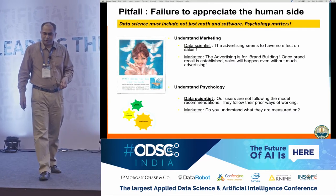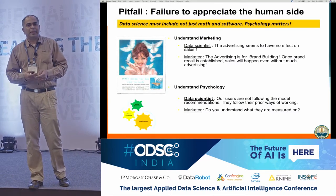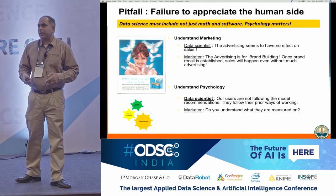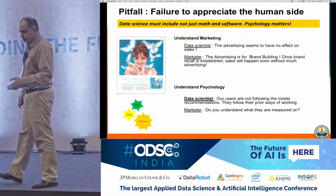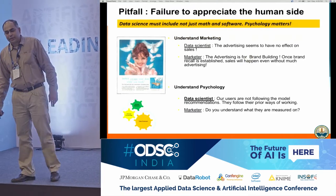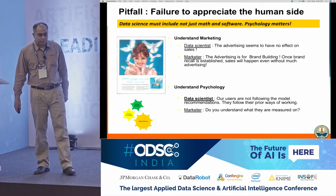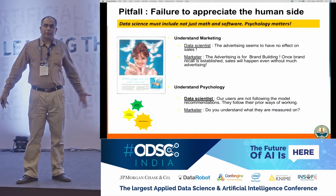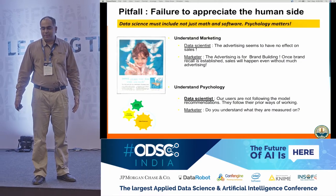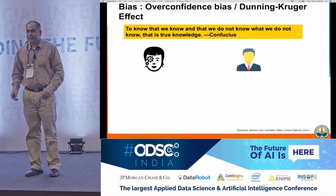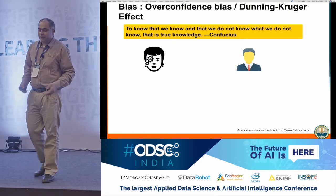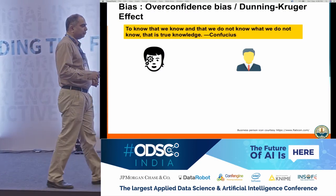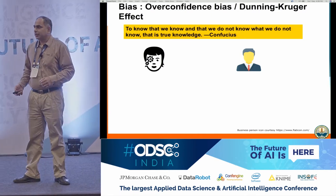Explainability is very important. You also need to understand what users are measured on. If they're measured on revenue and you're trying to optimize profits, they may not like your recommendations. Many of these pitfalls come together and result in what's called the Dunning-Kruger effect — in normal language, we call it overconfidence. It's an effect where you are more confident than you should be, basically because you don't know what you don't know. It's very important to know what you don't know.